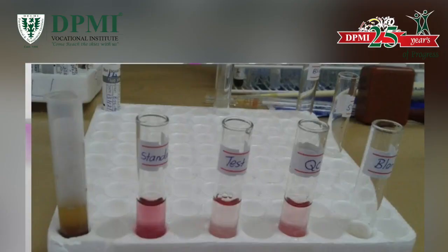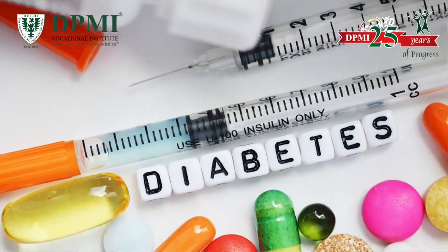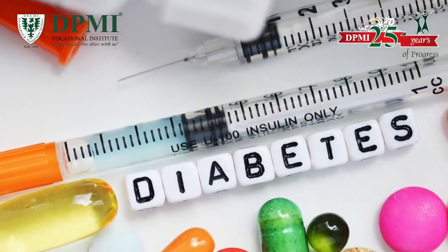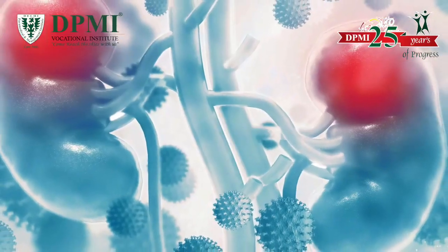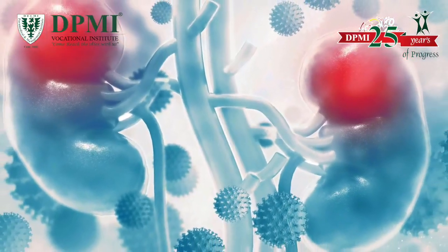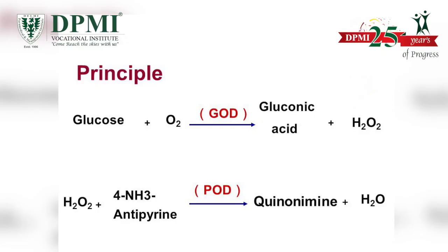Accurate measurement of glucose in body fluid is important in the diagnosis and management of diabetes, hypoglycemia, adrenal dysfunction, and various other conditions. For glucose estimation in serum, the glucose oxidase-peroxidase method is used.